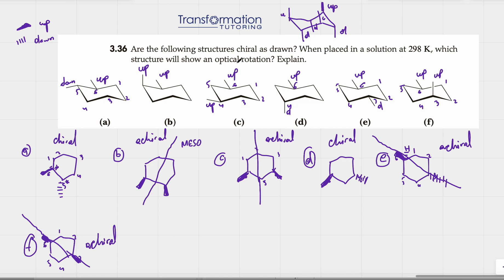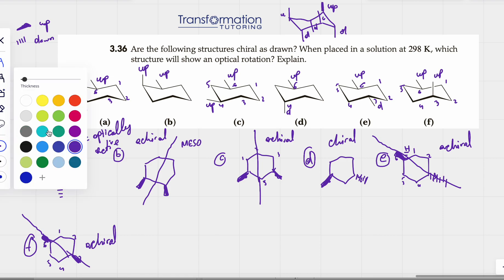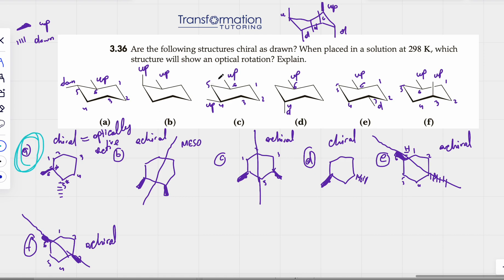If a molecule is chiral, it is optically active. If a molecule is achiral, it will be optically inactive. Looking at our results: A is chiral — optically active; B and C are achiral meso compounds — inactive; D is chiral — optically active; E and F are achiral — inactive. So only A and D will show optical rotation, since they are the only chiral molecules in the set. This is Maya Alochi from Transformation Tutoring — I really hope you found this video helpful.